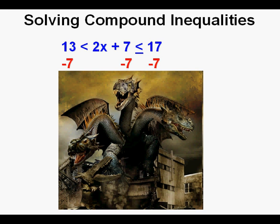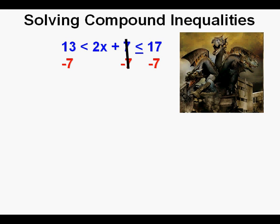Now in the middle, the seven minus seven cancels. We bring everything else down. So we have 6 < 2x ≤ 10.